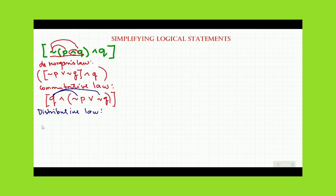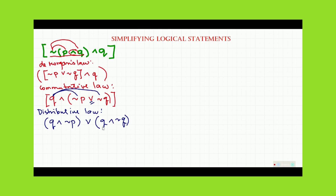We distribute Q to negation of P, then place the connector 'or', then distribute Q to negation of Q. After doing the distribution, we can simplify using the contradiction law.